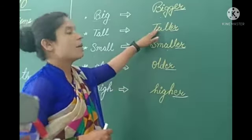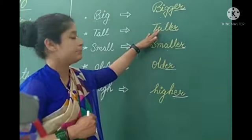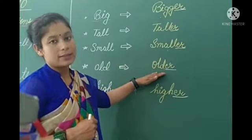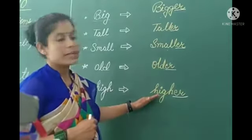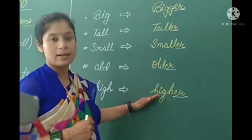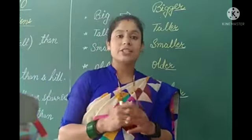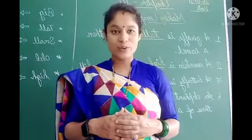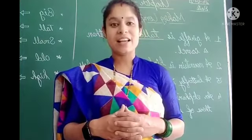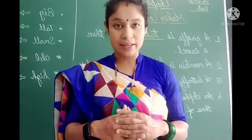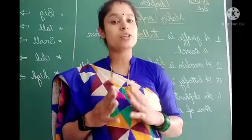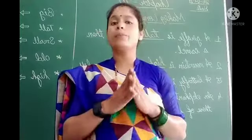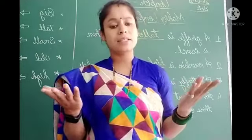For example: Ram is taller than Ria. Sharm is taller than Mohan. A mountain is higher than a hill. So for comparison, we use the ER form of describing words. Comparison is to examine in order to note the differences and similarities between two people, animals, objects, or things.